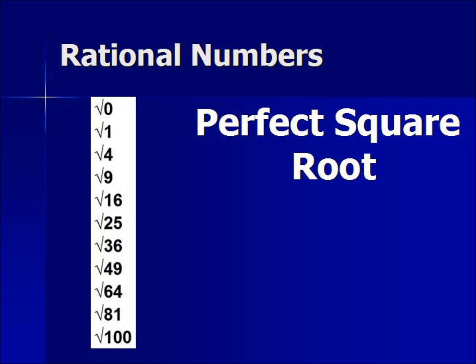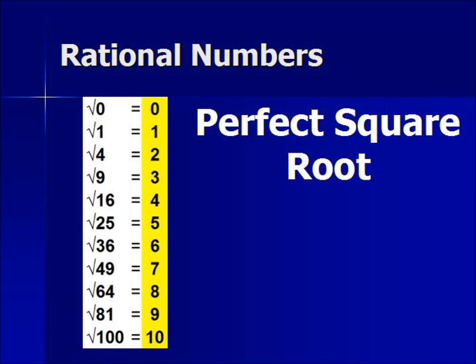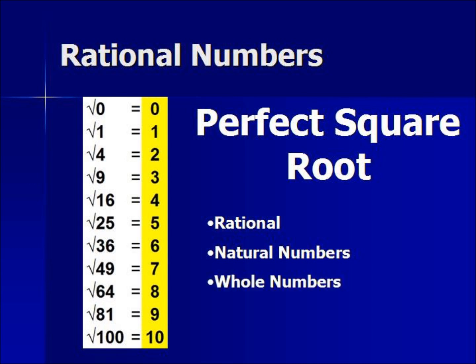Here are all the perfect square roots between 0 and 100. When you evaluate them in a calculator, you get back the numbers shown in yellow. These numbers are rational — they are natural numbers, and can also be defined as whole numbers as well as integers. So all those perfect square roots are rational.